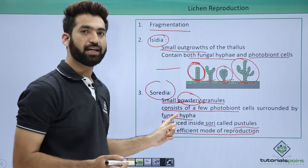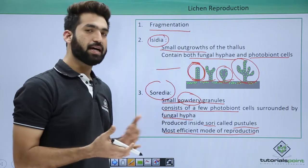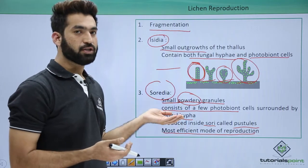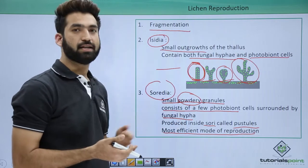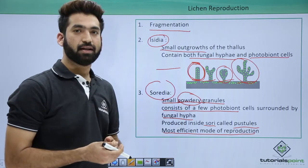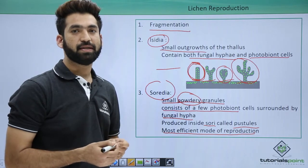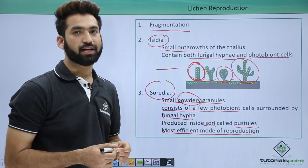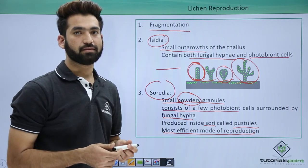Remember these two structures — isidia and soridia — which are responsible for reproduction in lichen. In the next session we'll be discussing the economic importance of lichen.